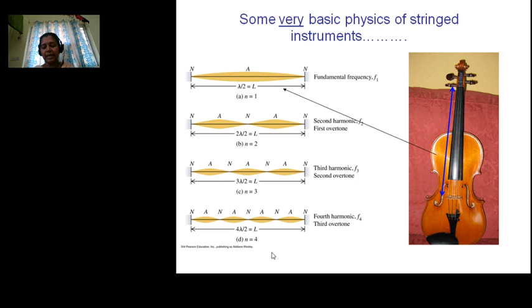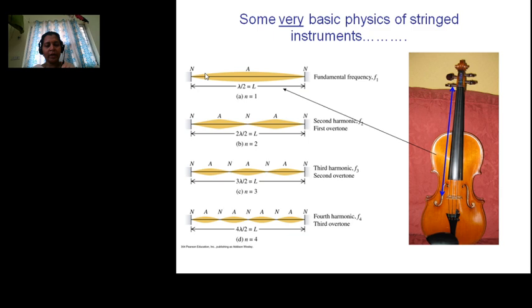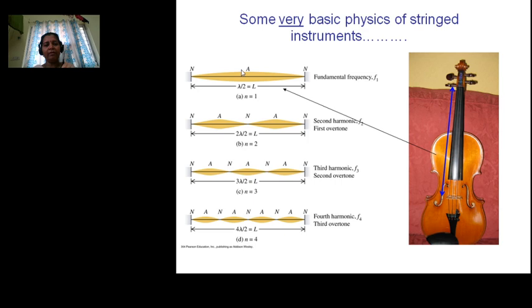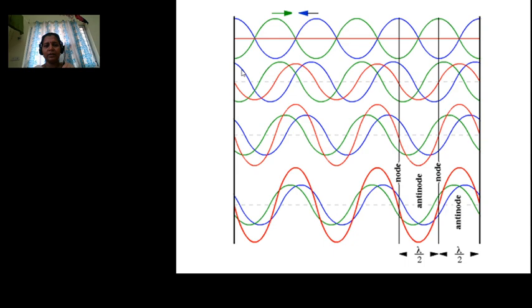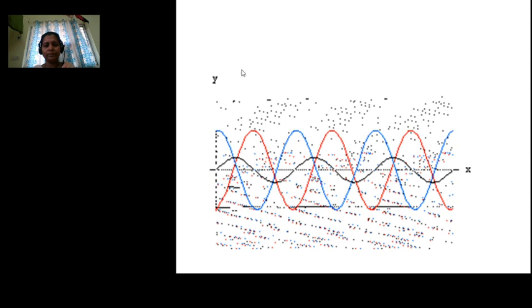In the next class, we are going to discuss about normal modes. If you have a string fixed at both ends, you can have modes of vibration with one loop, two loops, three loops, four loops, five loops, and so on. In the figure, it shows a loop with positive and negative halves — but actually, initially you get a positive half cycle, then a negative half cycle. Due to high frequency, it appears as a complete loop.